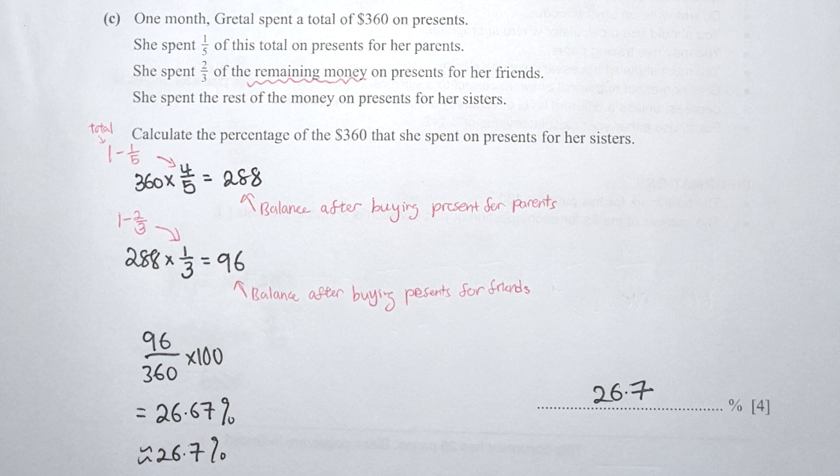Then two-thirds of the remaining money was spent, which means the balance will be 1 over 3. So 288 times 1 over 3 gives 96. This 96 is the amount of money she spent buying a present for her sister. So 96 divided by 260 times 100 gives 26.7% as your final answer.